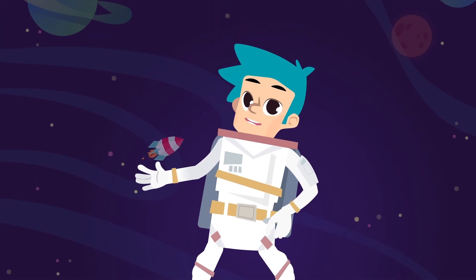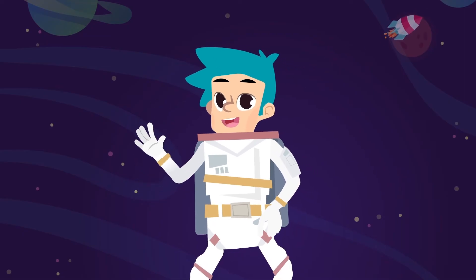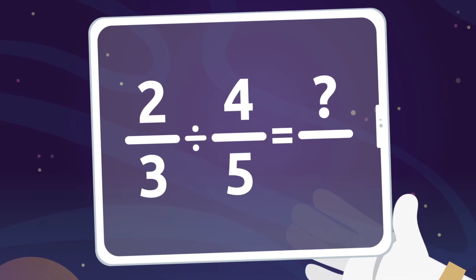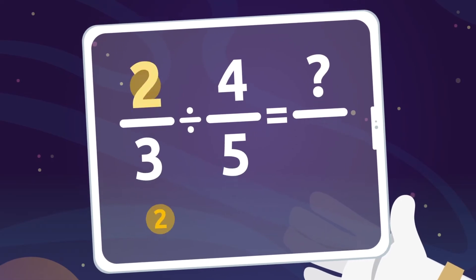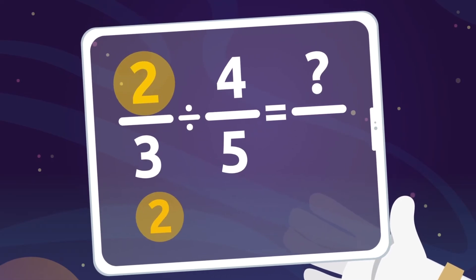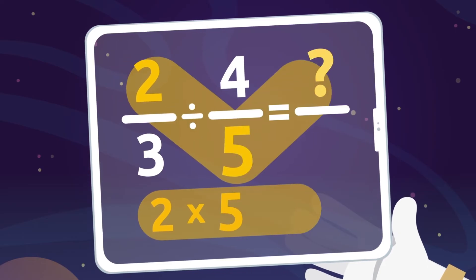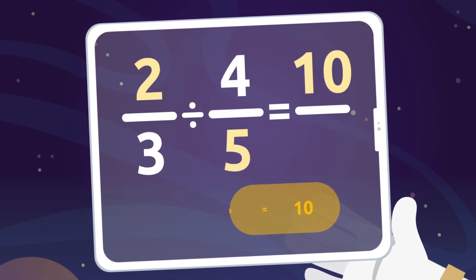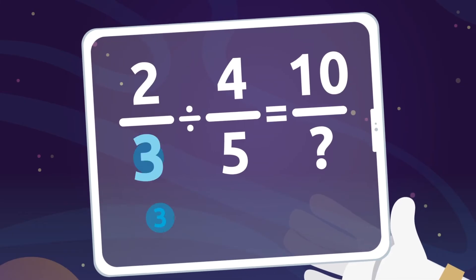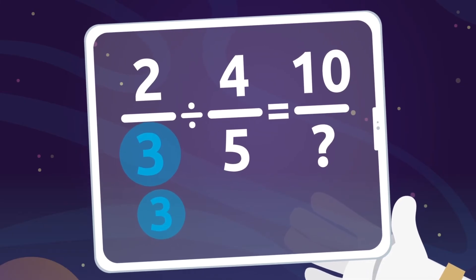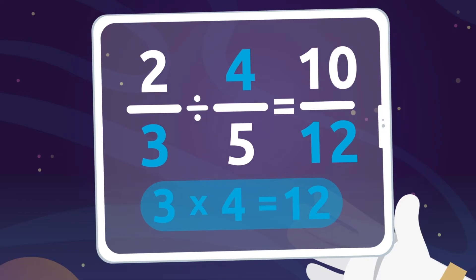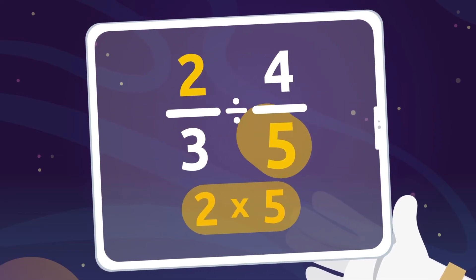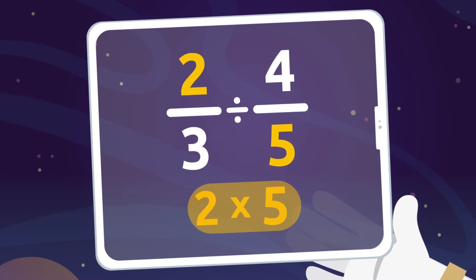Dividing fractions is fun — do you want to know how it's done? When we divide fractions, to find the numerator we multiply the numerator of the first fraction by the denominator of the second fraction. To find the denominator, we multiply the denominator of the first fraction by the numerator of the second fraction. This means that to divide fractions, we cross multiply them.